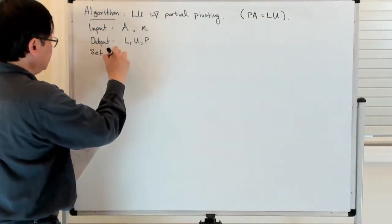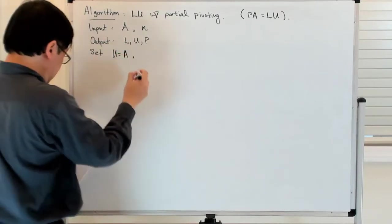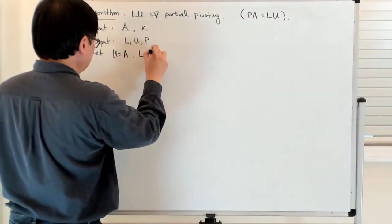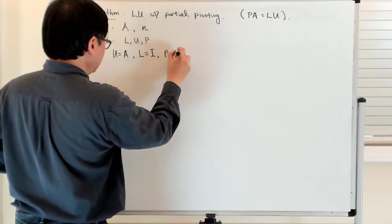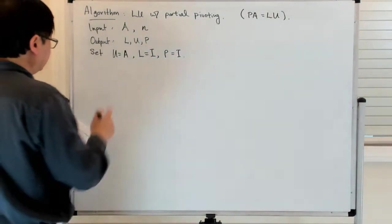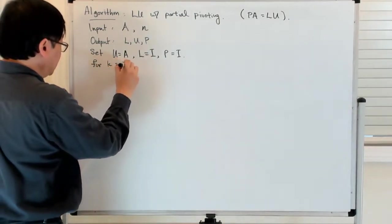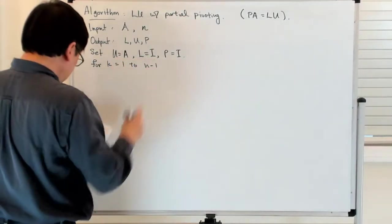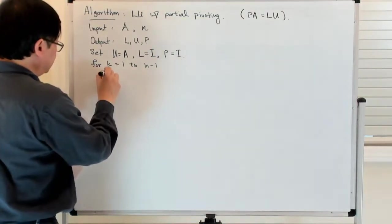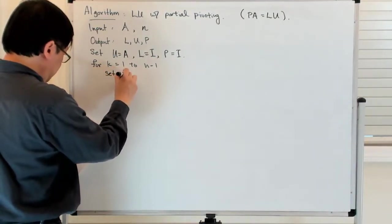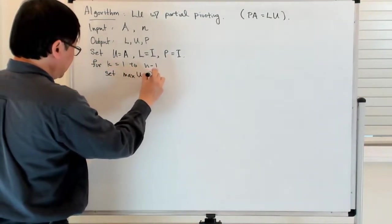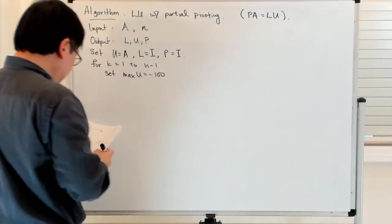First set U to A, L to the identity, and P to the identity. Then for K equals 1 to N minus 1, I do the following. I set max U to be negative 100.